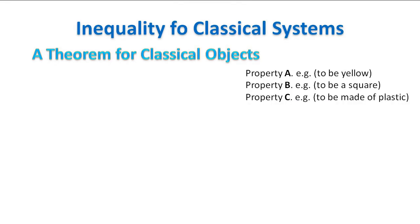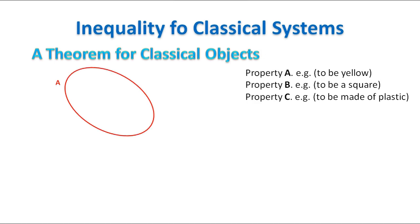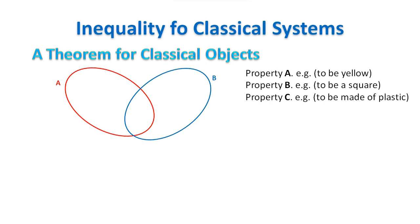Before we derive the Bell inequality, we need to prove a little theorem on classical objects. Suppose we have a collection of objects which can have any of three independent properties: property A, B, and C. We can draw a diagram. First we draw the set of all objects that have property A, then the set of all objects that have property B, and finally the set of all objects that have property C.